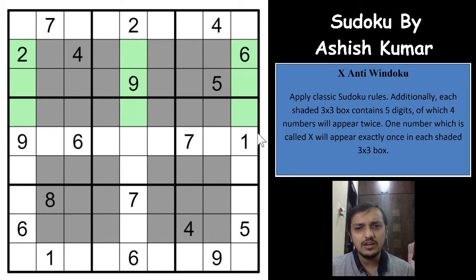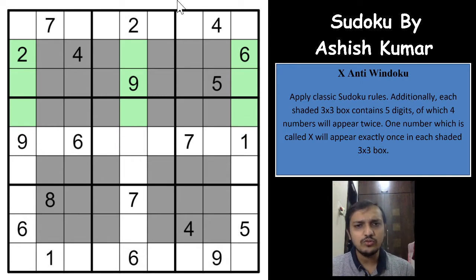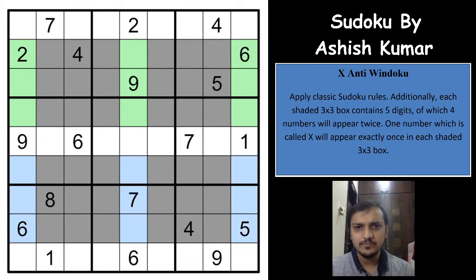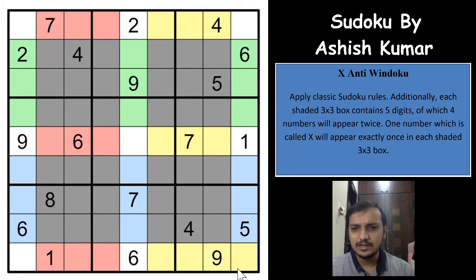The link for the contest by Kumresan and the online interface will be in the description. The same trick from Windoku also applies here. These 9 digits will have to be 1 to 9 in any order — and the same applies to each of the other groups of 9 cells in the Windoku regions. This is one of the tricks that helps us solve the X-Anti Windoku faster.